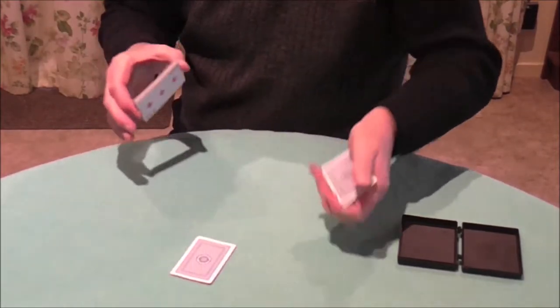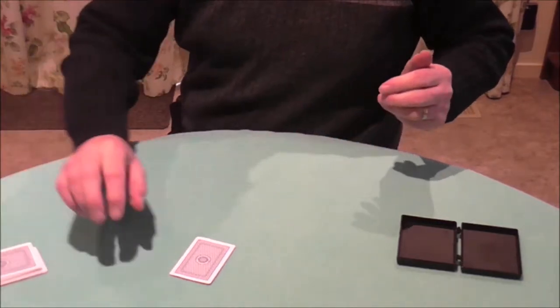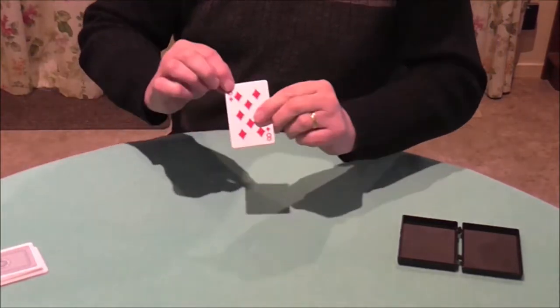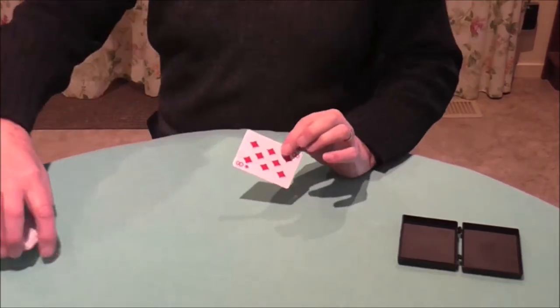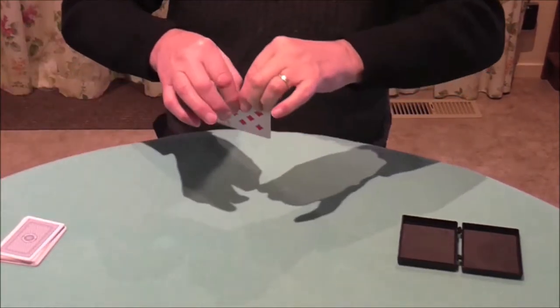We're going to make that disappear. Now of course the smaller an object is, the easier it is to make it vanish. So I'll tear the card into small pieces, and then I can make the magic happen.